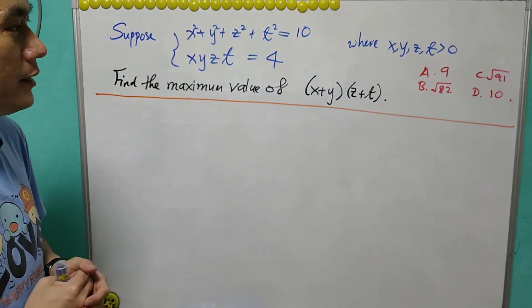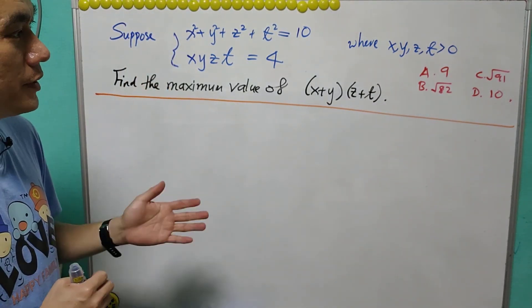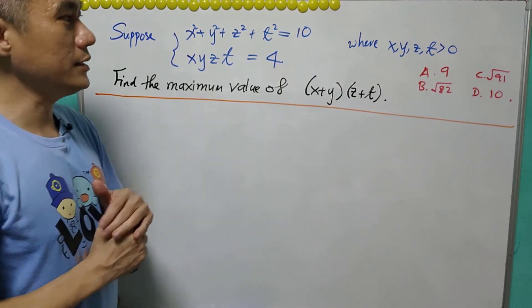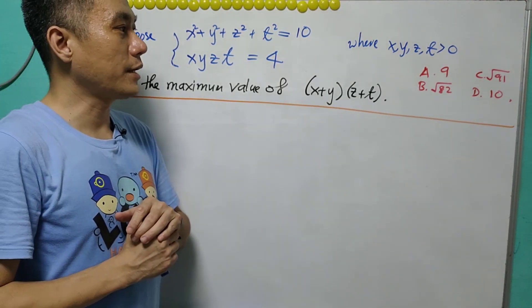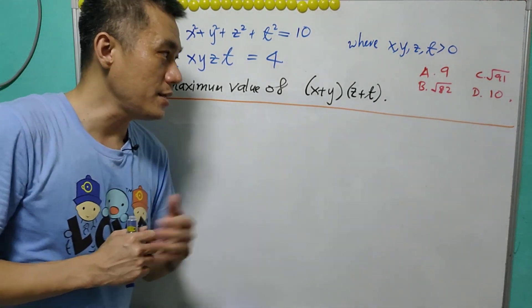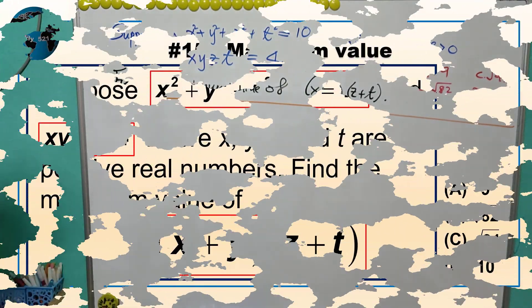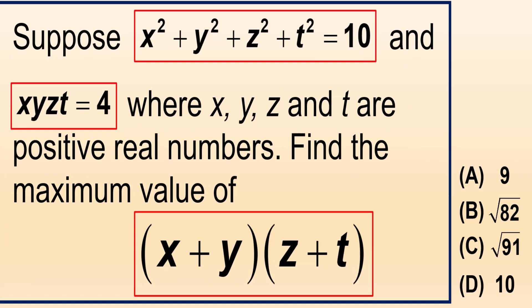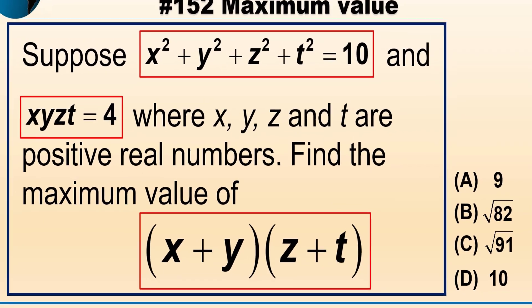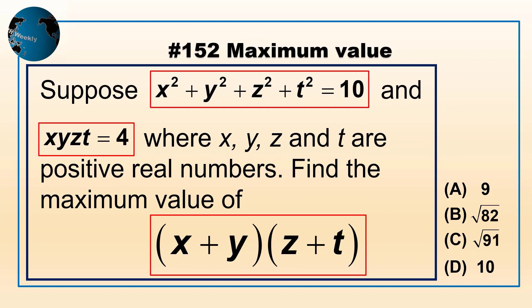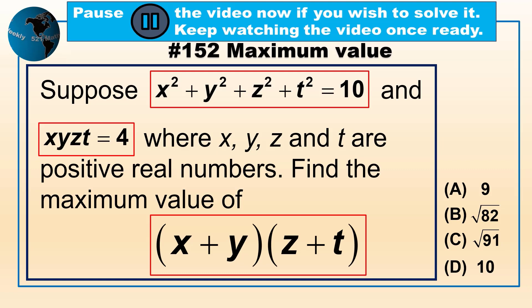The options are: a) 9, b) √82, c) √91, and d) 10. What do you think? Pause the video now if you wish to solve it. Keep watching once ready.